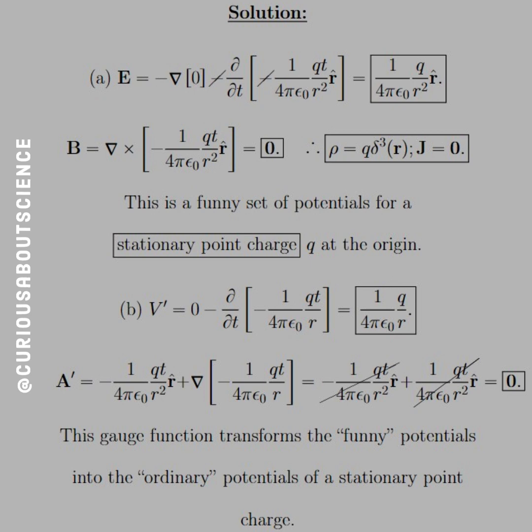Similarly, B is take the curl of this, which equals zero. That makes sense because our point charge isn't moving. But we know from previous exercises that this tells us to be careful.